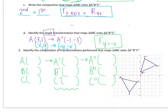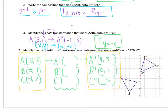Take a minute to list the coordinates for A, B, C and A double prime, B double prime, C double prime, then check back in. Once I have those coordinates listed for the pre-image ABC and the image A double prime, B double prime, C double prime, my goal is to figure out a transformation that would map between those two triangles.